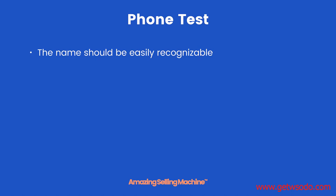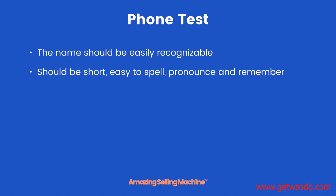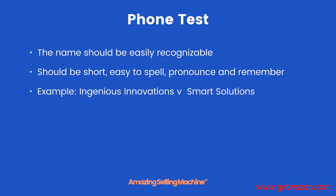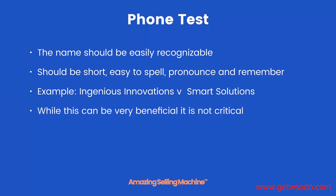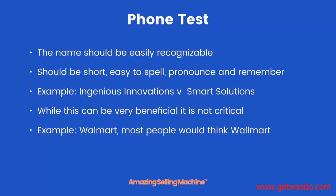The phone test: the name should be easily recognizable — short, easy to spell, pronounce, and remember. Example: 'Ingenious Innovations' versus 'Smart Solutions.' Obviously 'Smart Solutions' is much easier to spell, pronounce, and remember. While this can be very beneficial it is not critical. An example is Walmart — before Walmart existed, when they first opened, most people would think it was spelled 'Wal-Mart' with two L's. It's a simple example of how it's much easier to have a brand name that's easy to spell, and this is especially important once you build your domain.